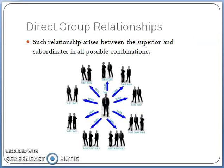The second type is the direct-group relationship. Such group relationship arises between the superior and subordinates in all possible combinations. As a superior, you will be having various responsibilities and contact with your group members — those who are having their own group. In the direct-single relationship, you have contact with individual subordinates, whereas in the direct-group relationship, you have a relationship with the group members working with their team.